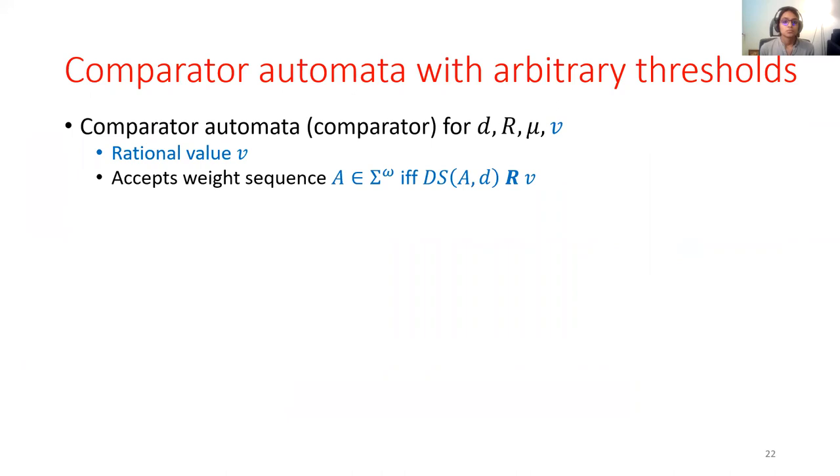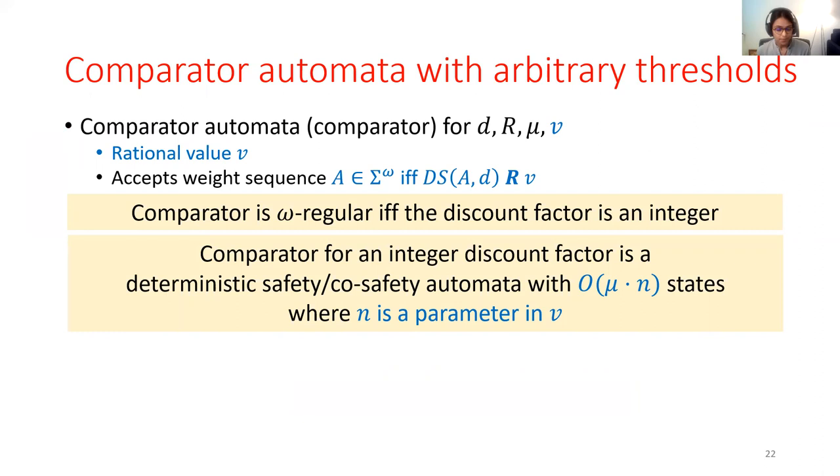So in this paper, we extend the existing results on comparator automata to allow comparisons with arbitrary threshold values. And we're able to show that the previous results on comparator automata extend here as well. We are able to construct the deterministic safety co-safety automata without much increase in their size either. For those familiar with the literature on comparators, the core idea is that even the threshold value B can be expressed as a lasso word.